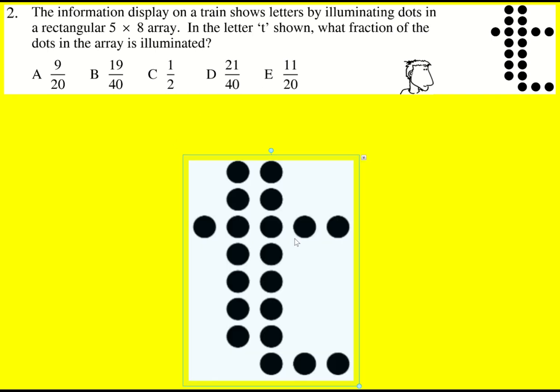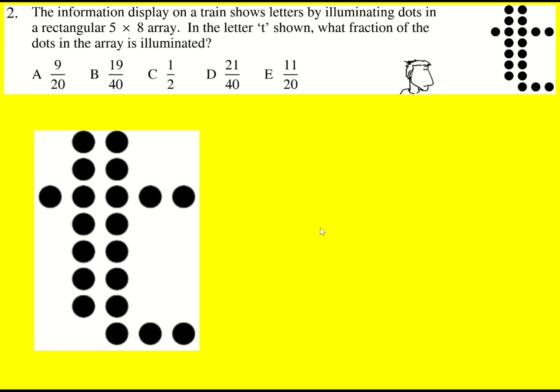We're illuminating dots in a 5 by 8 array to create this t. So in total the number of dots is going to be 5 times 8, 40.